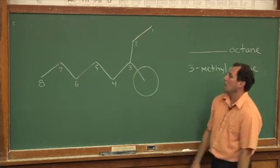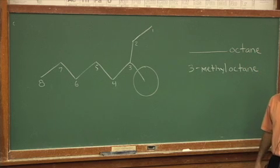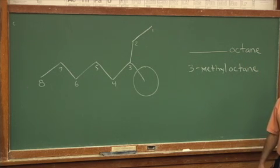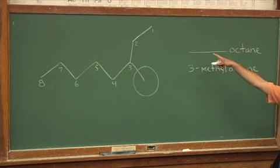Here's that branch right there. If I were to start numbering on the left, that branch would happen at carbon number six. So that wouldn't be right. I need to start numbering over here on the top right.